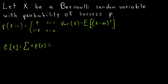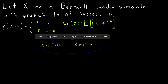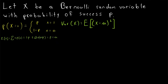One possibility is that x equals 1, which has probability p. The only other possibility is that x equals 0, which has probability 1 minus p. Then 0 times (1 minus p) is 0, so all we're left with is 1 times p, which equals p. So mu, the expected value of x, is equal to p.